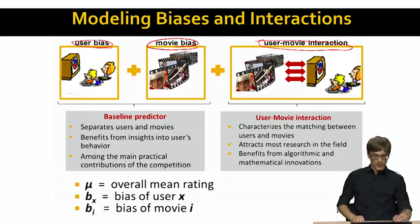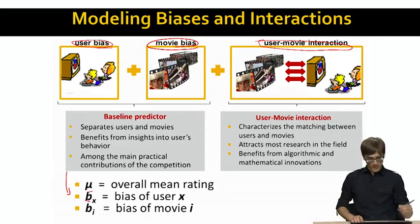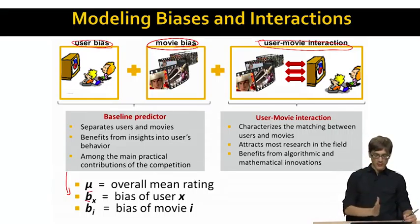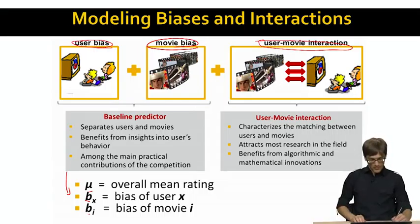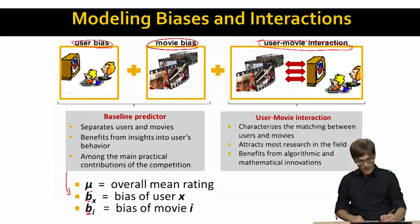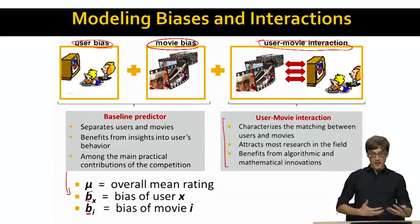In order to model biases, we need three values. We need the overall mean rating of all the movies in our dataset. We need the bias of the user, so how much does the user deviate on average from the mean rating, and how much does the movie deviate from the mean rating. And then we will be using our latent factors to basically characterize the interaction between users and movies.